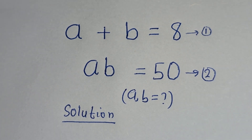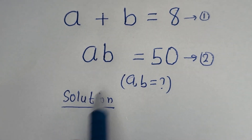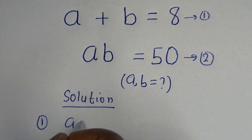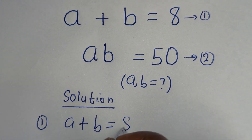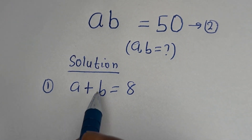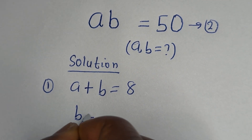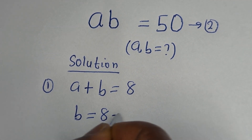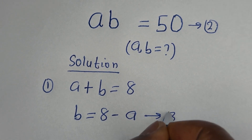From equation 1, A plus B is equal to 8. Let us make B the subject of the formula: B is equal to 8 minus A. Let us call this equation 3.